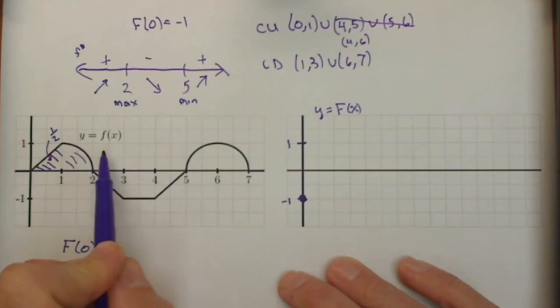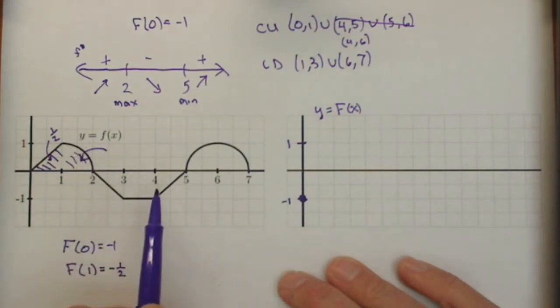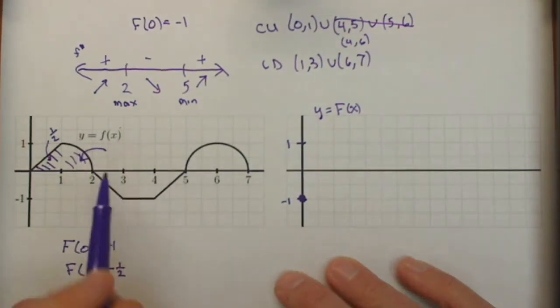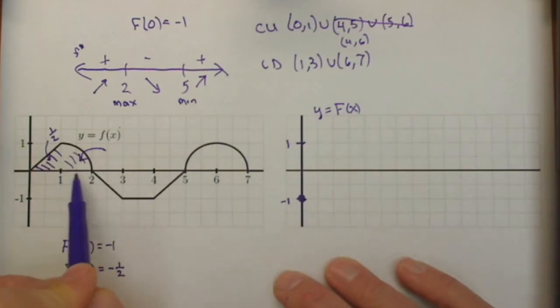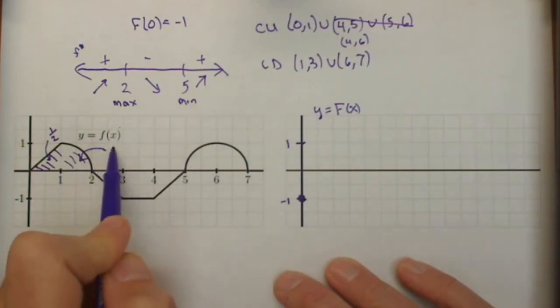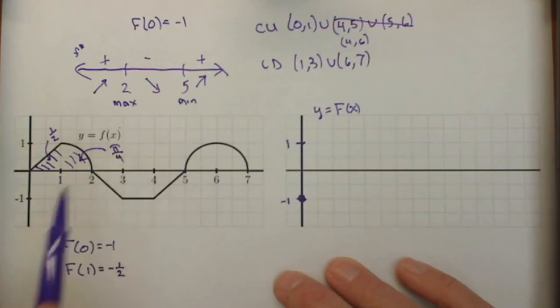We've got another increase because we're still moving forward if we think of this as a velocity function. This has an area of a quarter circle of radius 1 or pi over 4. So to get from 1 to 2.